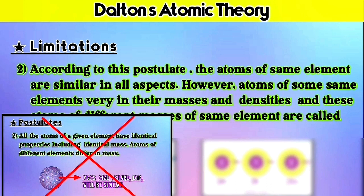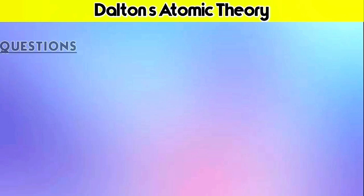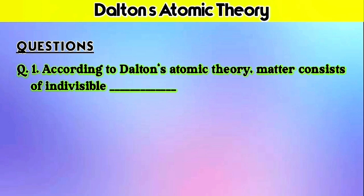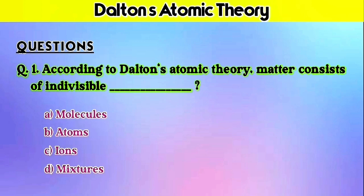I hope you all understood Dalton's atomic theory and its drawbacks. Now let's look at some important questions related to this theory. Question 1: According to Dalton's atomic theory, matter consists of indivisible — what? Options: A) molecules, B) atoms, C) ions, D) mixtures. The answer is B) atoms — because the first postulate states that matter consists of indivisible particles called atoms. Question 2: What are the laws supporting Dalton's atomic theory? The two supporting laws are the law of conservation of mass and the law of constant proportion.